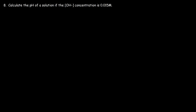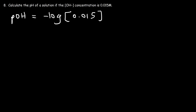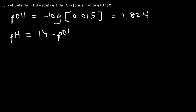Here's the last one. Calculate the pH of a solution if the hydroxide concentration is 0.015. The first thing I would calculate is the pOH: it's the negative log of the hydroxide concentration, which is 0.015, giving 1.824. Then calculate the pH, which is 14 minus the pOH. So 14 minus 1.824 is 12.176.